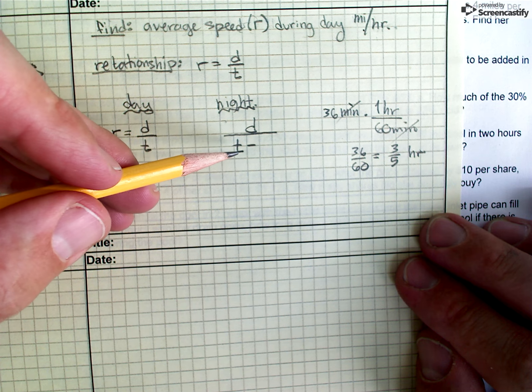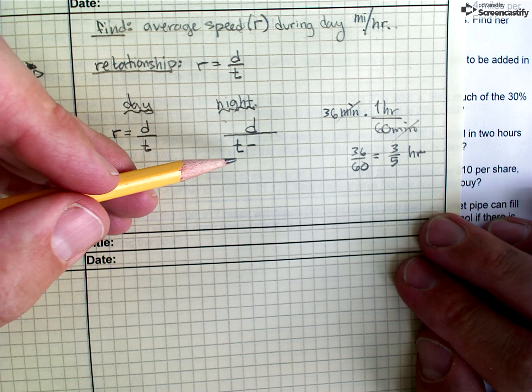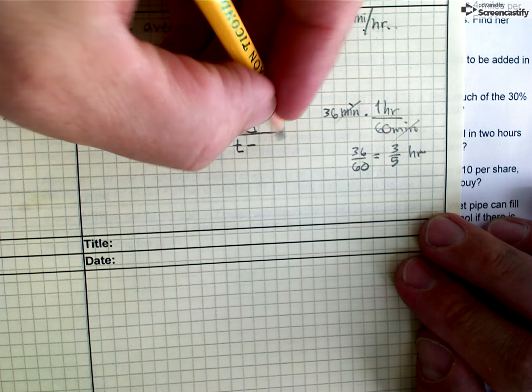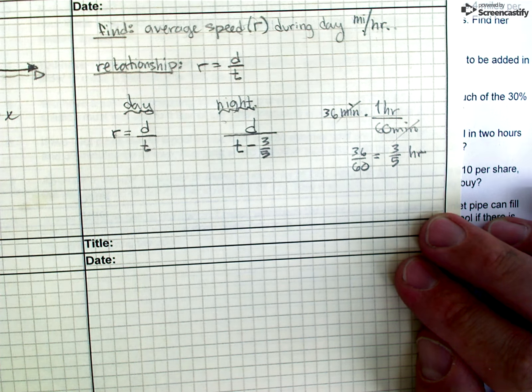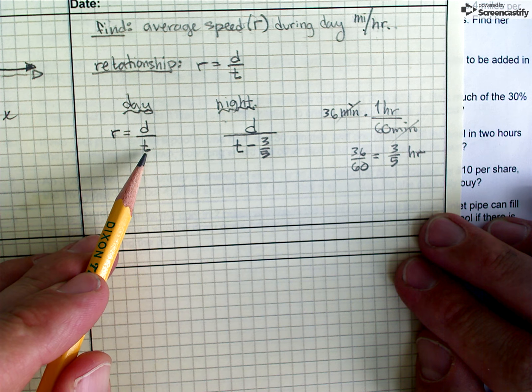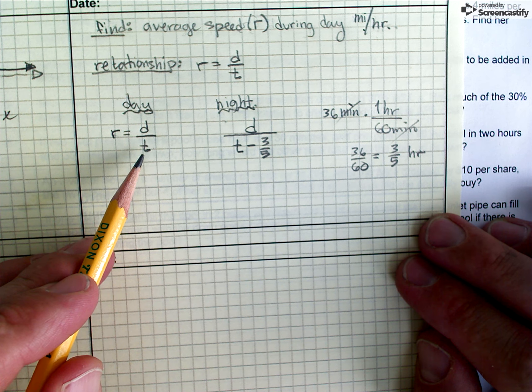So really, the time that it takes to do this 120-mile trip at night is 3 fifths of an hour less time than I took during the day.